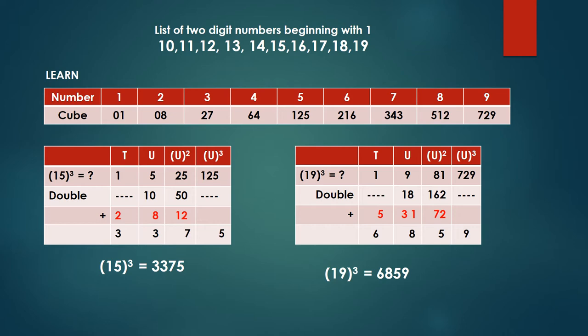Now for this the first thing is you should know by heart all the cubes of 1 to 9, all the single digit numbers. In this also, actually speaking up to 5 everyone knows right. So cube of 1 is 1, cube of 2 is 8, cube of 3 is 27, cube of 4 is 64, cube of 5 is 125.